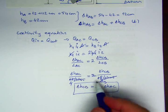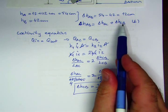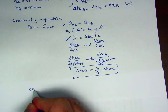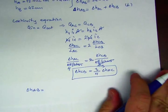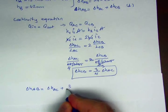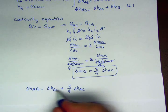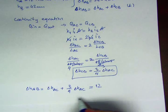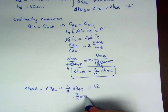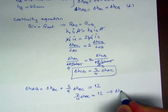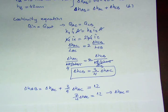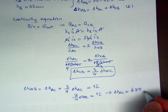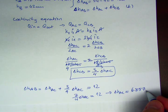So now I wrote down Delta HCB in terms of Delta HAC, and I can plug that in here. Delta HAB is equal to Delta HAC plus 3 over 4 Delta HAC. This becomes, Delta HAB is known, that is 12. So 7 over 4 Delta HAC is equal to 12. From here, Delta HAC becomes 6.857 centimeters between A and C.